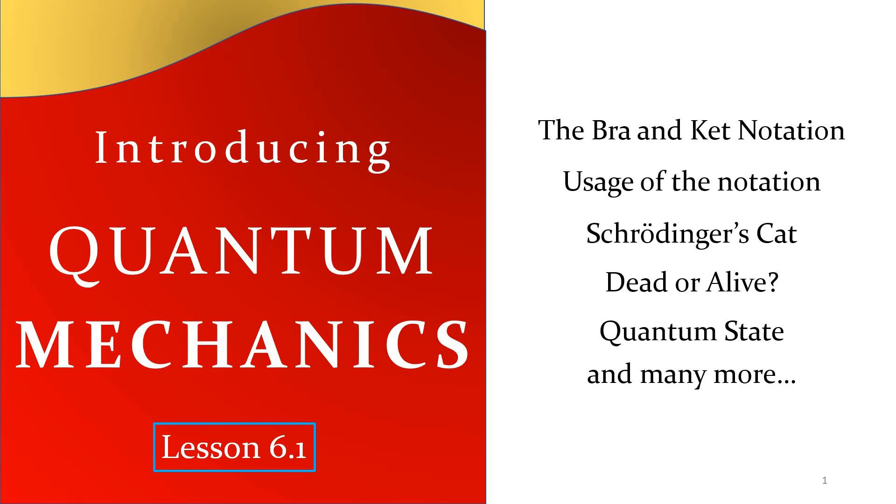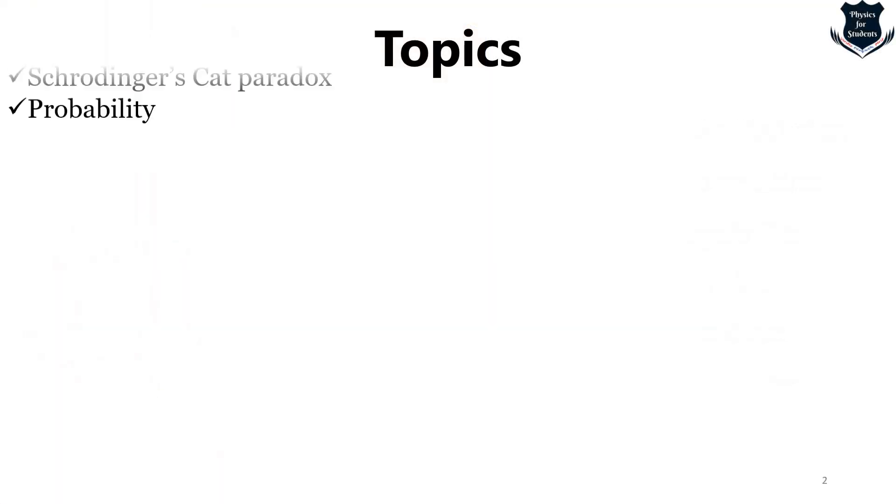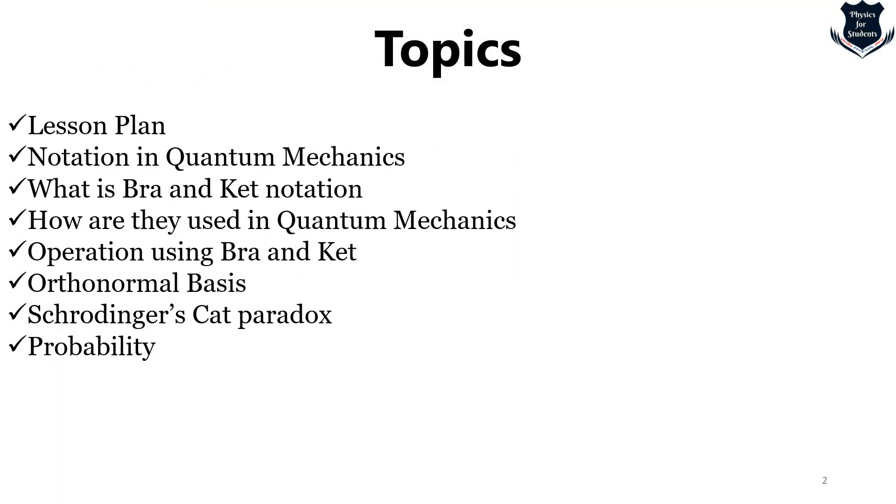Let us see what topics we are covering. First, I'd like to tell you the lesson plan for this topic: What are the notations in quantum mechanics? What is the Dirac Notation, commonly known as the Bra and Ket Notation? How are they used? Operations using Bra and Ket. What is an orthonormal basis? The famous Schrödinger's Cat Paradox and probability.